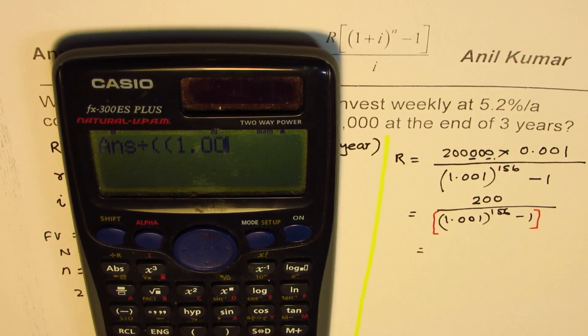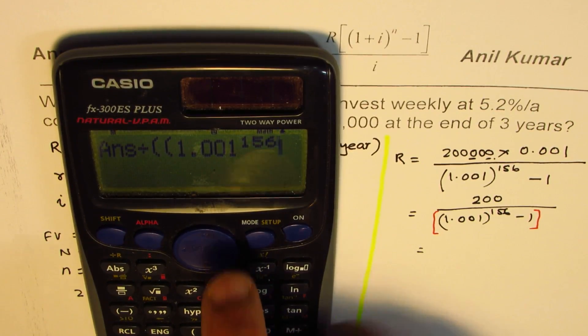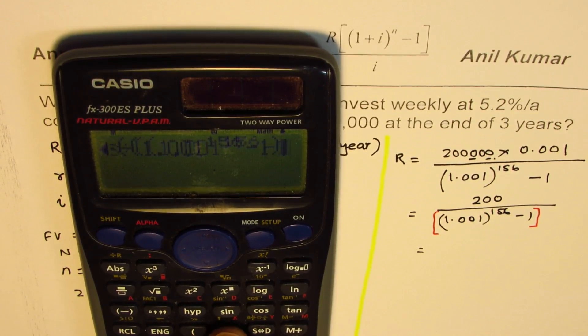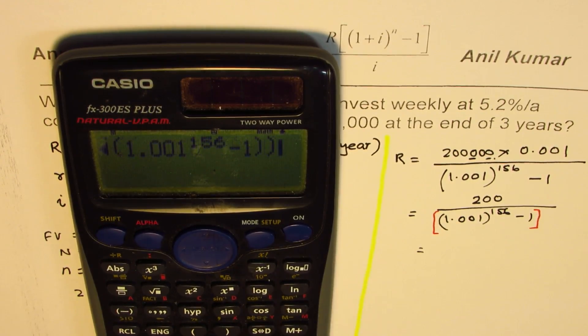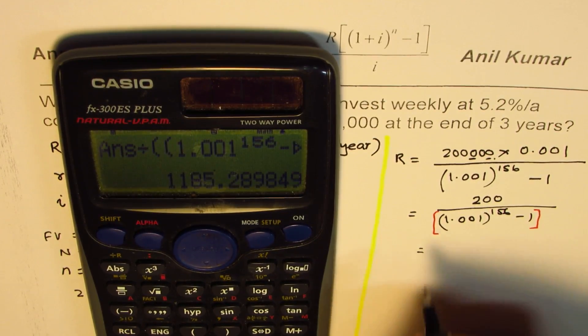So let's put two brackets. And then 1.001 to the power of 156. Got it? So that is one part. Minus 1. Bracket close inside. And then the whole thing will be divided. And then equal to. You get your answer.